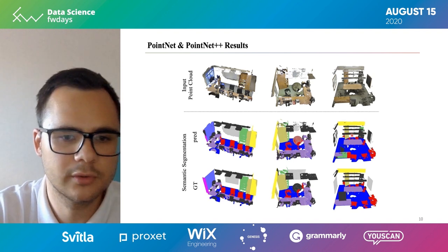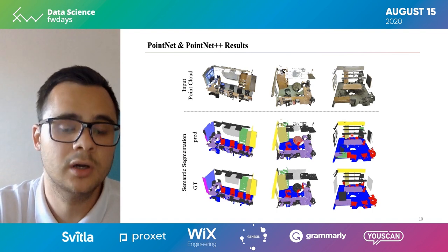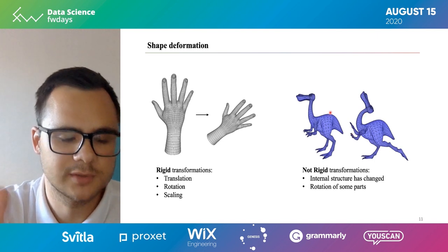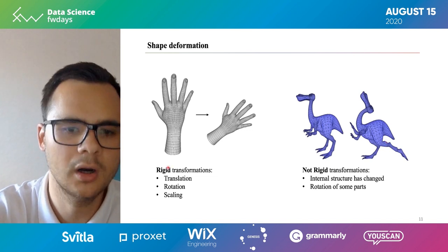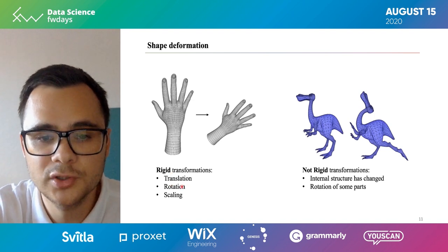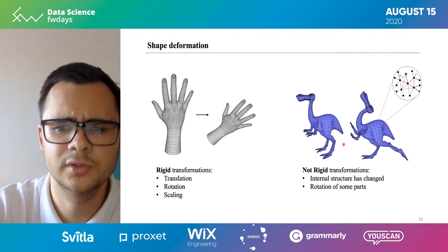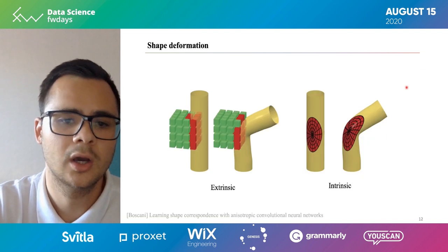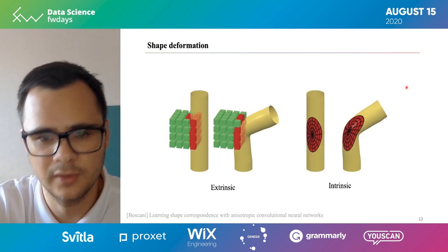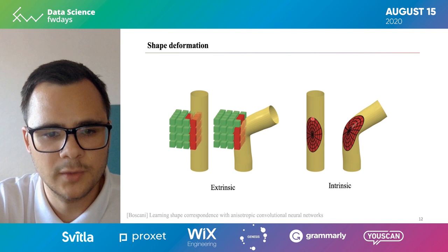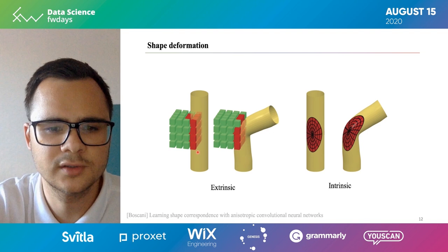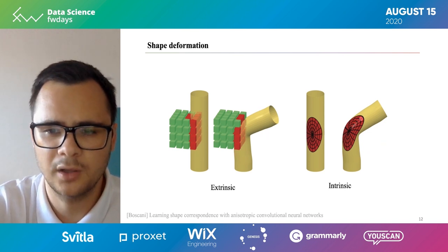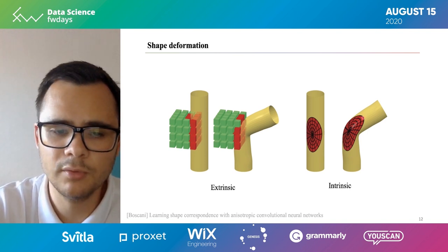Now we've talked about point clouds and classical computer vision tasks. But in the 3D world we can do more — for example, non-rigid object deformation. There are two types of transformation: rigid transformations, which are translation, rotation, and scaling; or non-rigid, where we change the internal structure of the mesh. Applying non-rigid transformation to a point cloud is quite challenging, which is why we want to know the connectivity in the mesh — the connectivity between points. A filter responding to a straight cylinder feature wouldn't respond to a bent one, so knowing this connectivity allows us to analyze non-rigid deformation more easily.